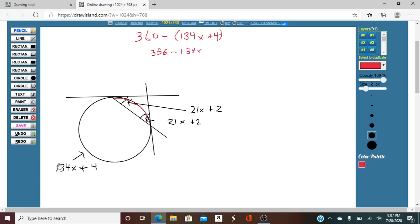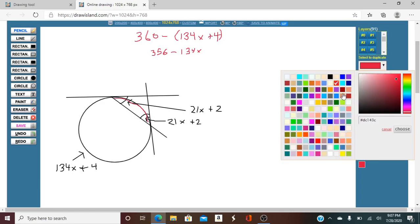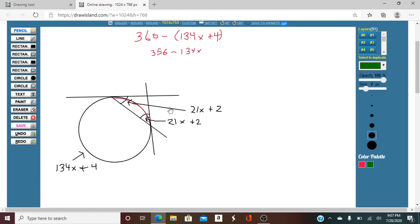So this arc length minus this arc length is going to equal this angle here. So we can use that to figure out what X is, because this angle here is also 180 minus these two angles.